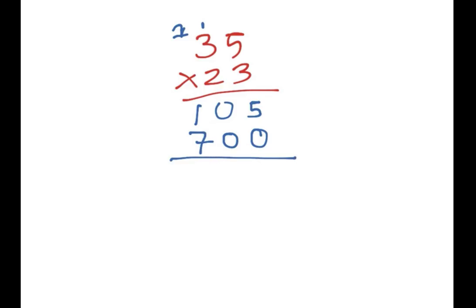And then we do my favourite bit again. We add up. So we do 5 plus 0, which is 5. 0 plus 0, which is 0. 7 plus 1, which is 8. And there we have it. Nice and simple.